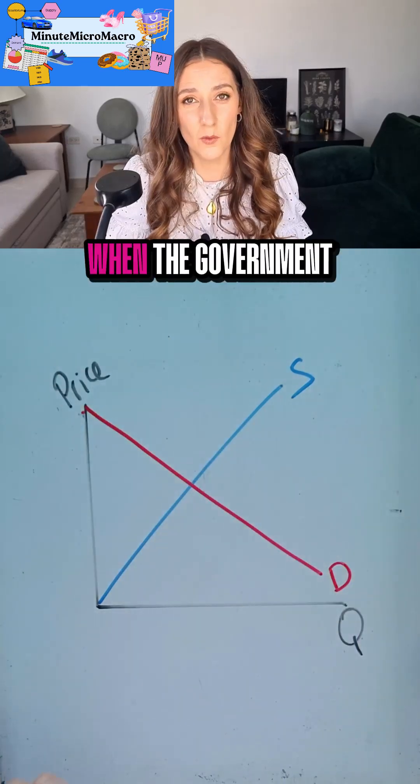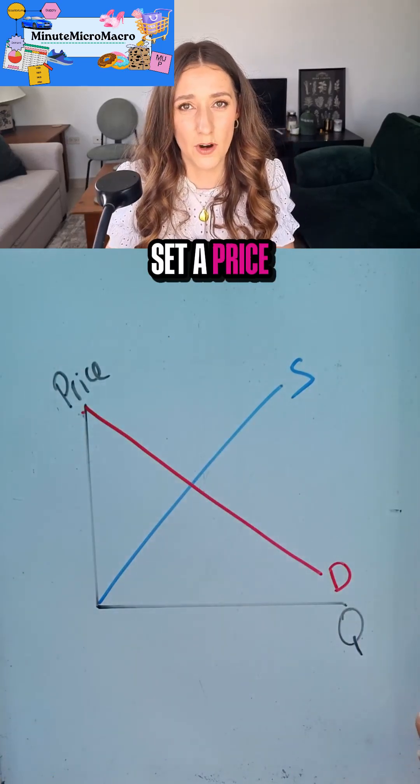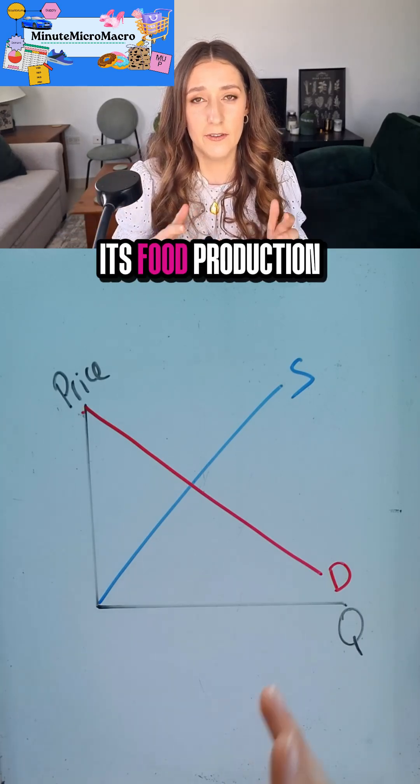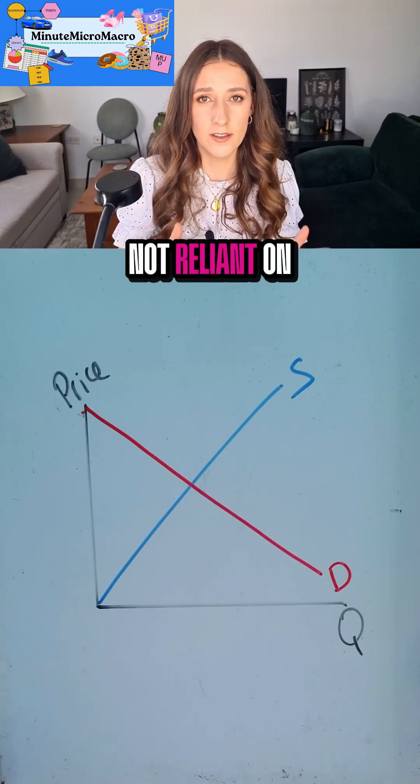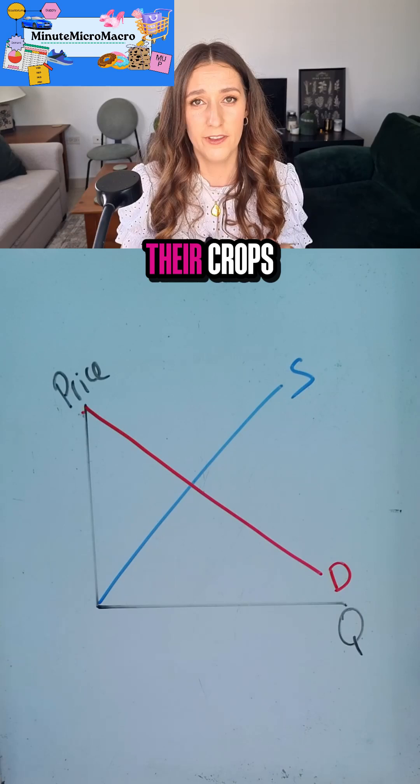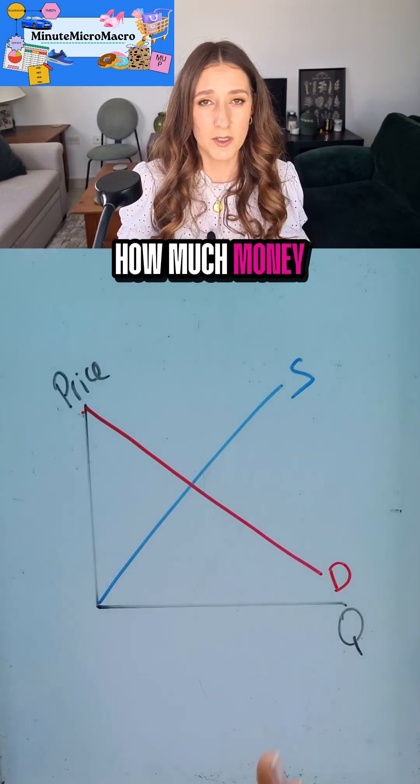An example of when the government may want to set a price floor might be for farmers. We want to make sure that the country is secure in its food production so that we're not reliant on other countries. And so we want farmers to be able to plan for their crops and plan for how much money they're going to make.